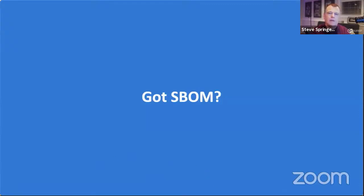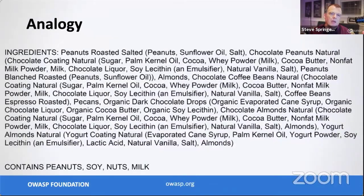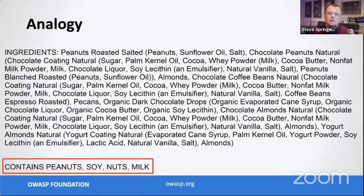We're going to talk about SBOMs today. Most people have an analogy that an SBOM is a list of ingredients - at its very fundamental level, this is kind of what it is. As a consumer, this is like the ingredient list on the back of an energy bar - it allows me to make basic risk-based decisions. For example, if I'm allergic to nuts, that's something I might care about. In the software world, we're not looking for nuts - we might be looking for the presence of Struts, because many organizations should and can be allergic to certain types of frameworks.